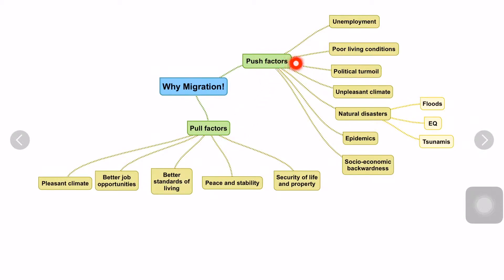Push factors means why people go out of a place. Pull factors means why people migrate into a place. One thing is pleasant climate - everyone wants to live in a pleasant climate. And better job opportunities - obviously people will migrate there, like Gulf countries where so many people are migrating from India, Indonesia because of better job opportunities.